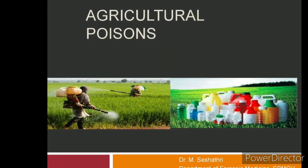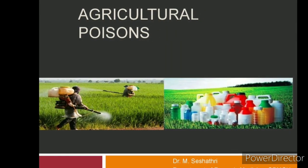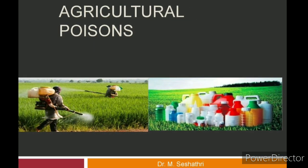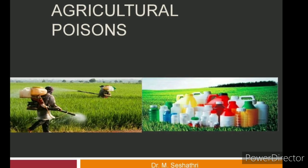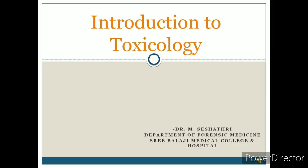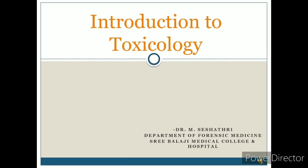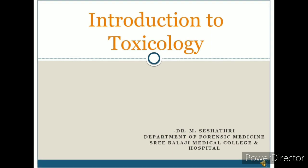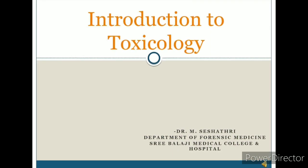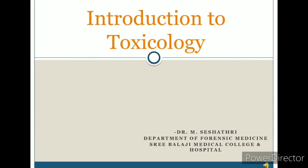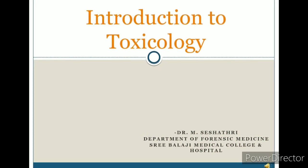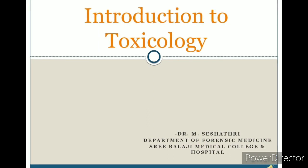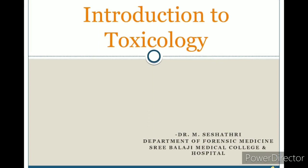Good morning students, I am Dr. Seishadri and today we are going to discuss about agricultural poison. Before discussing the topic, we will see a few facts about poisoning. In the previous class we read about what is a poison, the qualities of homicidal and suicidal poison, classification, medical legal laws related to poison, diagnosis in a living and dead patient, samples to be collected, postmortem findings, treatment, and the duties of a medical practitioner in a suspected poisoning case.